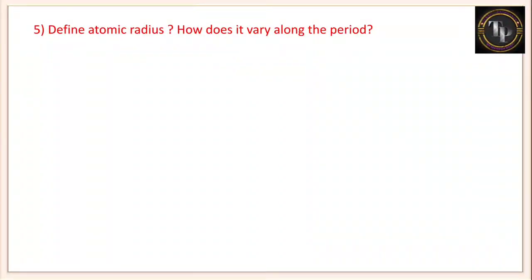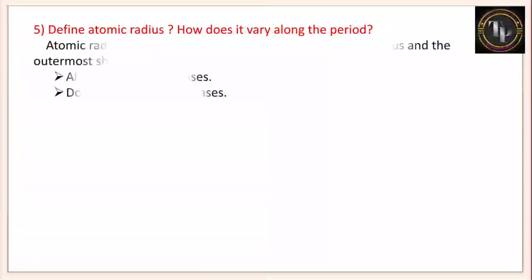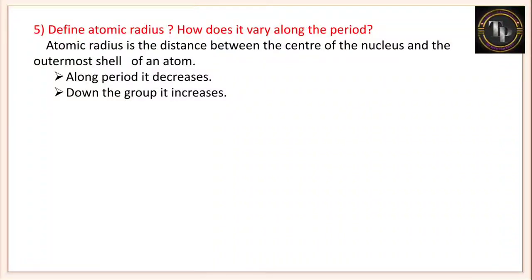Define atomic radius and how does it vary along the period? Atomic radius is the distance between the center of the nucleus and the outermost shell of the atom. As we move from left to right along the period, it decreases because size decreases. As we move from top to bottom down the group, it increases because size increases.